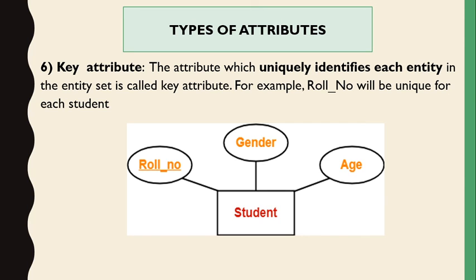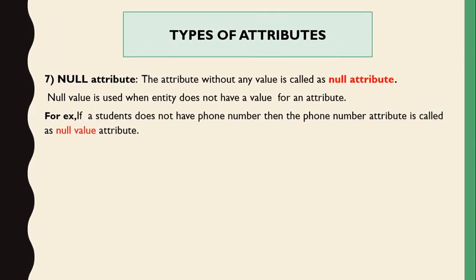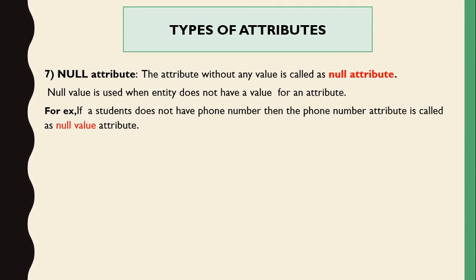The last type is null attributes. A null attribute is an attribute without any value. For example, some employees do not have a landline number — they have only a mobile number. So the landline number field will be null and does not contain any value. These are called null-valued attributes. Thank you, today we stop here.